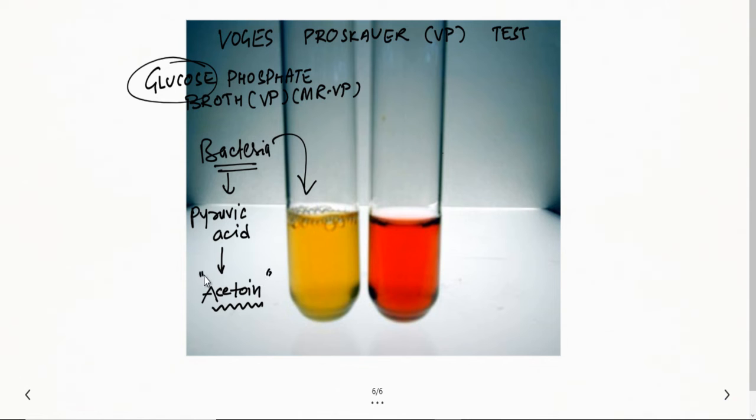How can we detect this? We have to add a few things. First, we add 5% alpha-naphthol, and then 40% potassium hydroxide (KOH). This should be done in the presence of oxygen and in this specific order: first 5% alpha-naphthol, then 40% KOH. These reagents convert the acetoin into a red color compound.